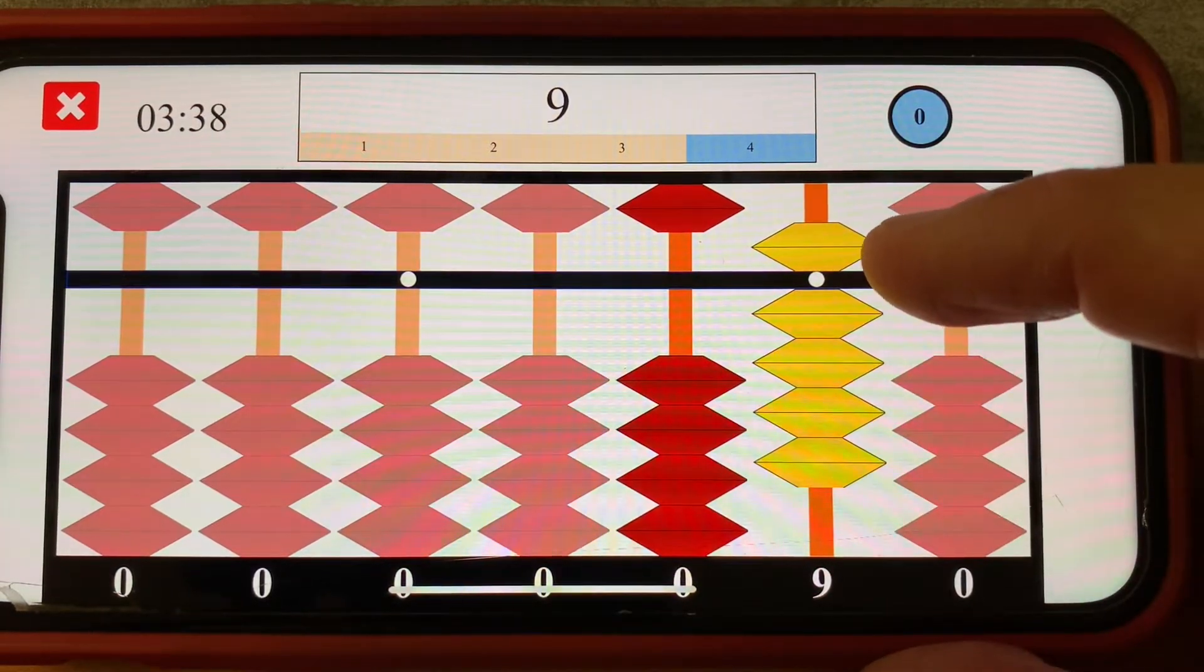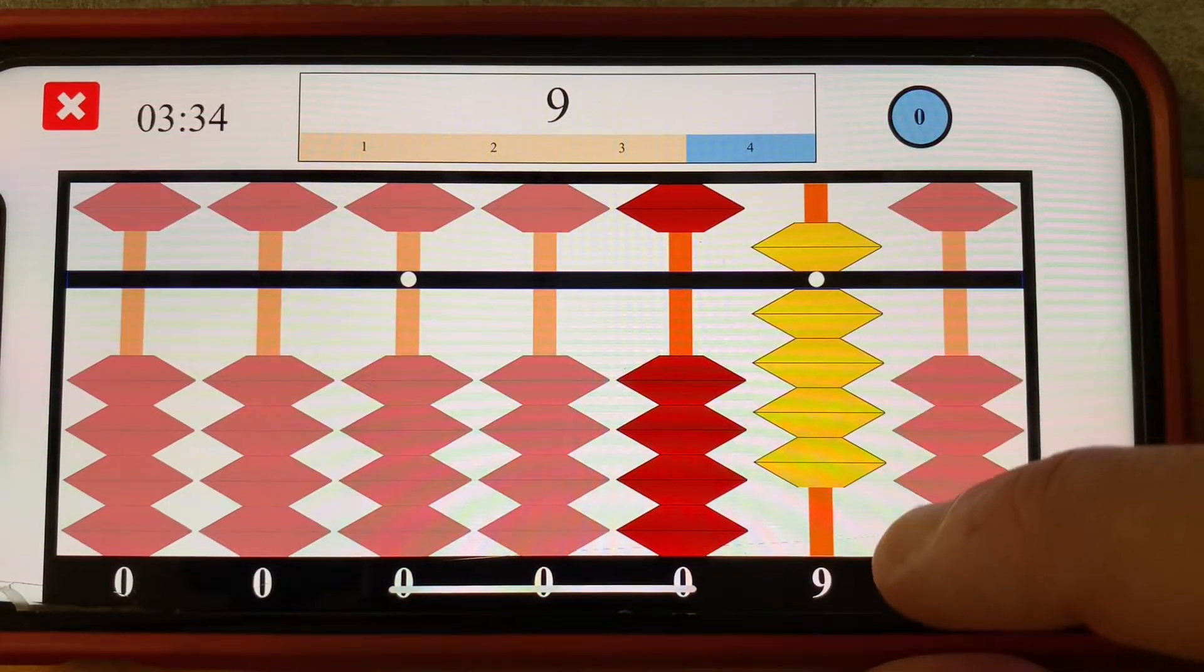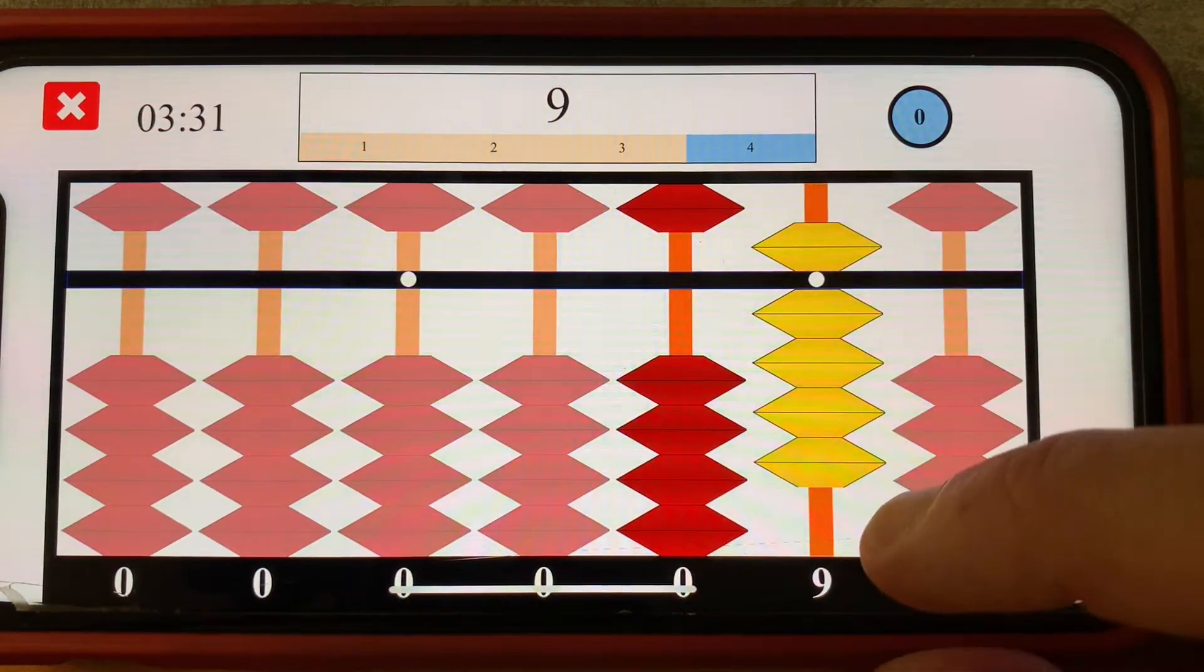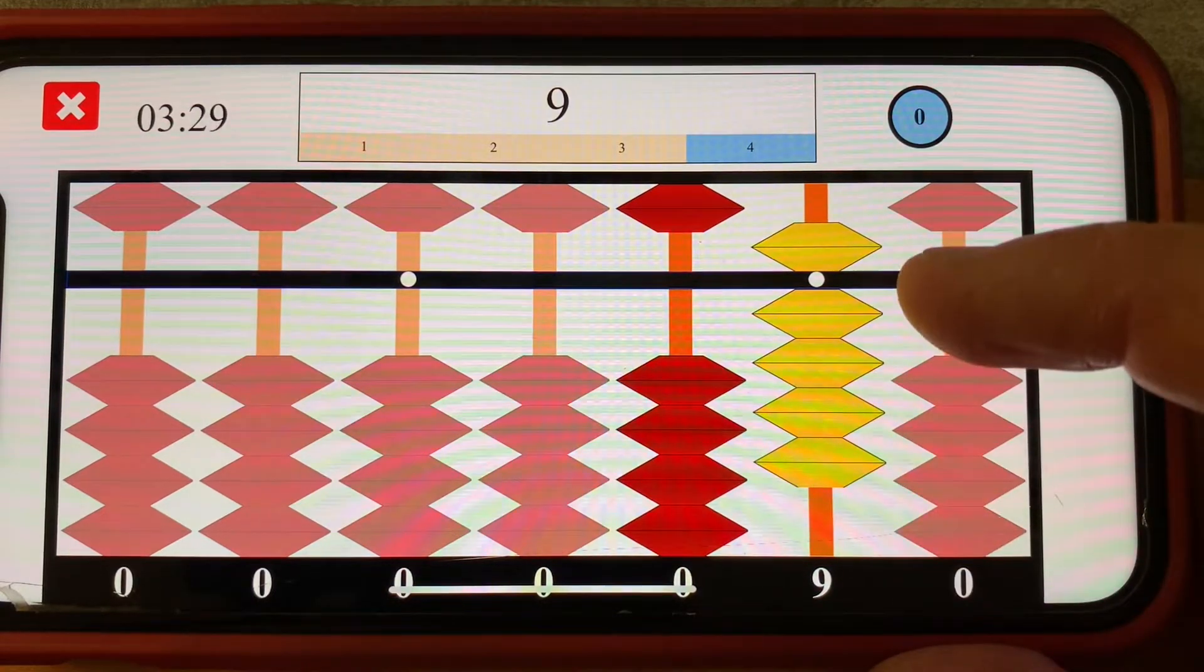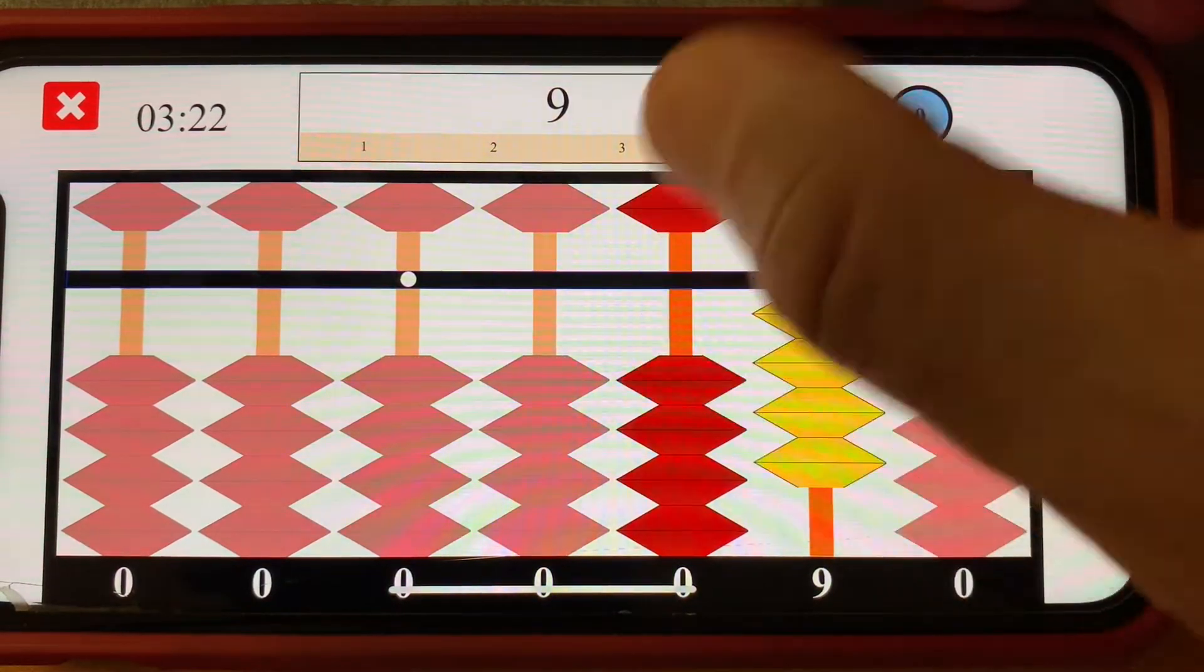To add 9 to 9, I've encountered my condition that I don't have enough beads to add 9. In this case, I have no available beads. Well, this is where we use our 10 pair addition rule.